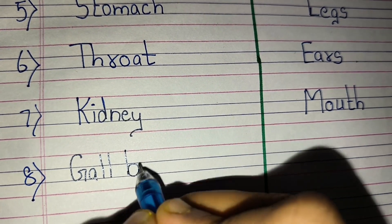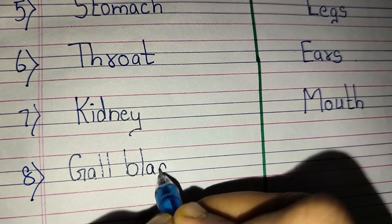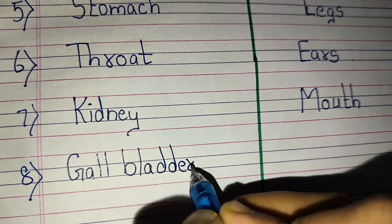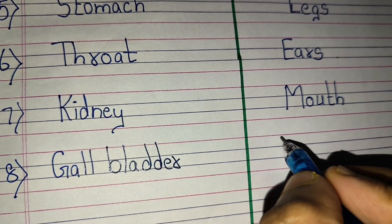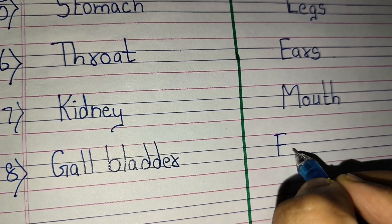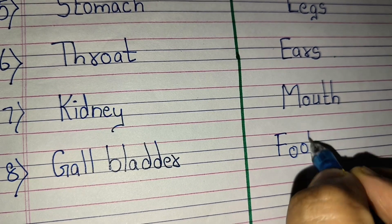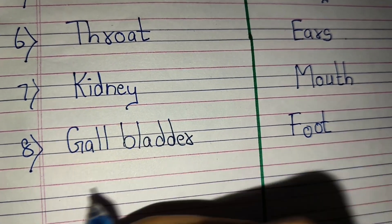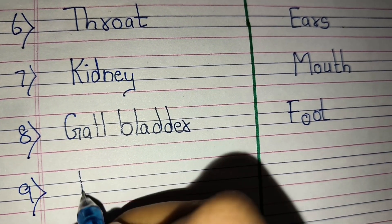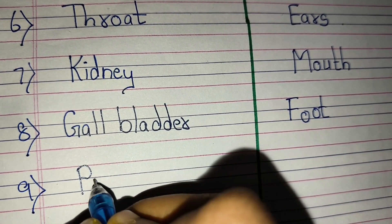Seventh internal organ is kidneys. External organ is mouth. Eighth internal organ is gallbladder. External organ is foot.